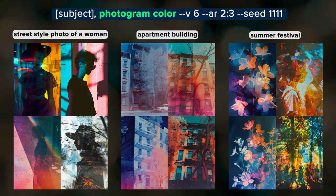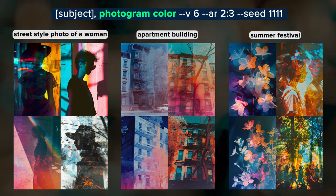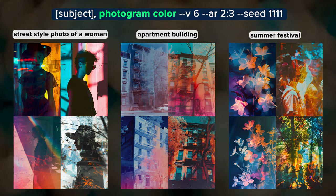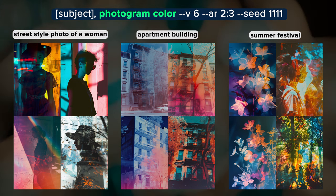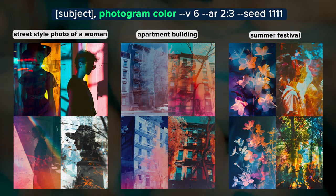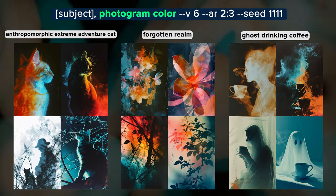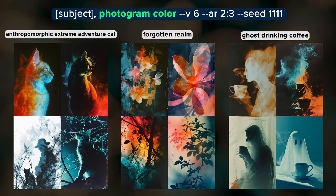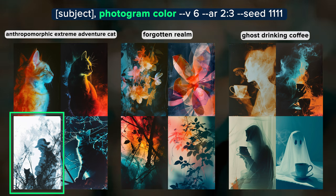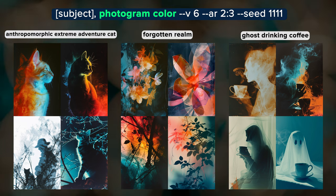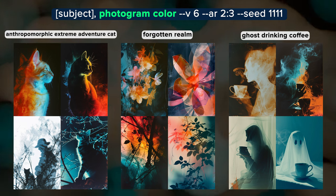It's interesting that Summer Festival is more dominated by plants. Natural objects, especially plants, are common subjects in photograms. Since Summer Festival is a vague subject, I suspect Midjourney is leaning more heavily on the photogram technique, which is why we're getting more plants. This happens with the Forgotten Realm image grid as well — another vague subject. Midjourney was able to make a cat, but it's not anthropomorphic, and only one of the four images truly displays the photogram style. This doesn't mean we can't get an anthropomorphic cat with a photogram style, but it would take some more prompt crafting.